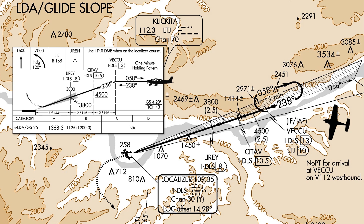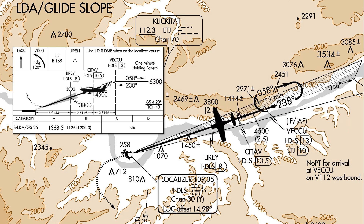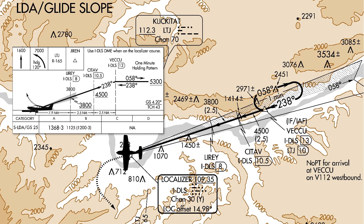We need DME on this particular approach to identify the step-down fixes. We'll intercept the glide slope at 3,800 feet and follow it down to 1,368 feet, where we'll either decide to go missed or break off the approach course and get aligned with the runway for landing. Notice how far above ground we'll be at the decision altitude — 1,125 feet — so we'll still be quite far out from the runway at the point we need to have sight of it.